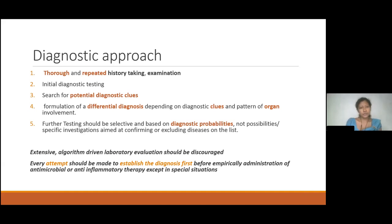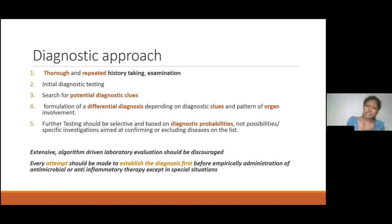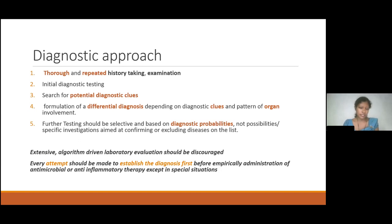The approach to a patient with PUO starts with thorough and repeated history taking and examination. Then we need a set of initial diagnostic testing, look for potential diagnostic clues, and based on those clues and the pattern of organ involvement, formulate a differential diagnosis. Depending on the differential, we perform specific investigations based on diagnostic possibilities to confirm or exclude diseases. Extensive algorithm-driven laboratory evaluations should be discouraged, especially in resource-poor settings. We need to take every attempt to establish a diagnosis first, rather than treating empirically, except in special situations.